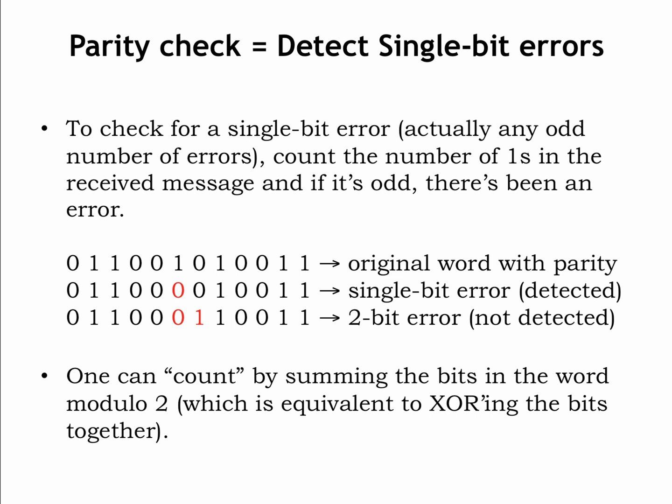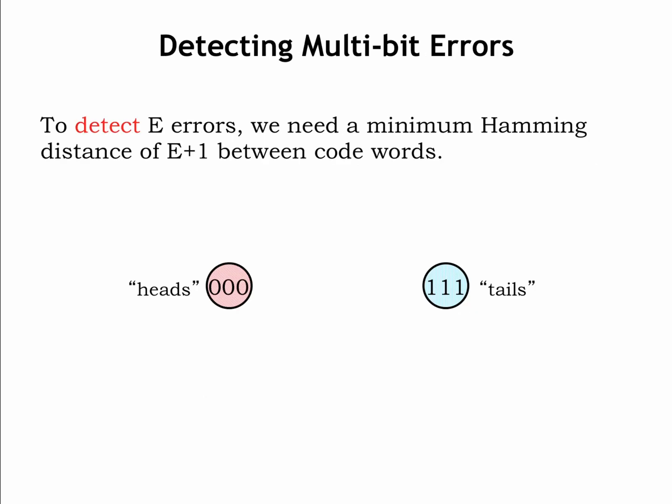Parity is useful for detecting single-bit errors. We'll need more sophisticated encoding to detect more errors. In general, to detect some number, e, of errors, we need a minimum Hamming distance of e plus 1 between codewords.